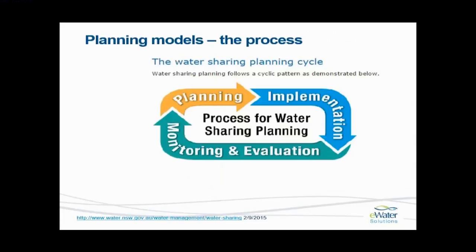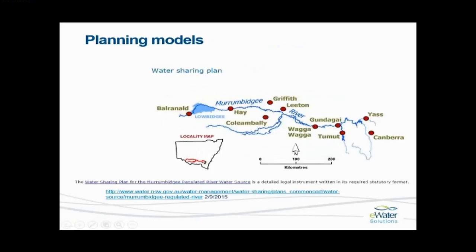The process for creating planning models is shown here from a New South Wales Government website. We have planning in the top left — somewhat complex — involving models, community consultation, and stakeholder consultation, with a number of iterations before the plan is locked down as a water sharing plan. Implementation follows and lasts the duration of the plan, perhaps five or ten years. Then you have monitoring and evaluation — to ensure the plan is properly implemented and is behaving as expected. For example, the Murrumbidgee River already has a water sharing plan and a new one will shortly be prepared using Source.